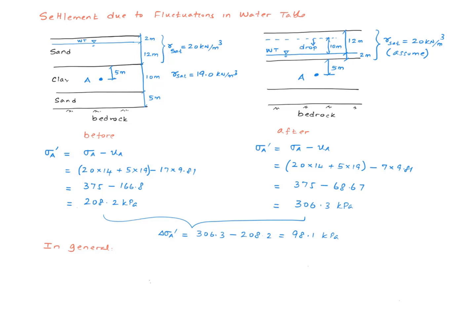We can kind of generalize it as follows. So increase in the effective stress at point A can be written as the effective stress after minus the effective stress before. Effective stress after is the total vertical stress minus the pore pressure at point A. And similarly, the effective stress before is the total vertical stress minus the pore pressure at point A.